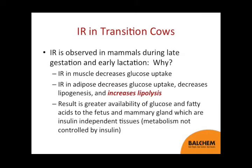So how does this all pertain to transition cows? Insulin resistance is observed in mammals during late gestation and early lactation. Why does this occur? Insulin resistance causes less uptake of glucose by muscle cells; in adipose tissue it decreases glucose uptake and decreases lipogenesis, and increases lipolysis. This is all done to help the cow out because it results in greater availability of glucose and fatty acids to the fetus and mammary gland, which are insulin-independent tissues.